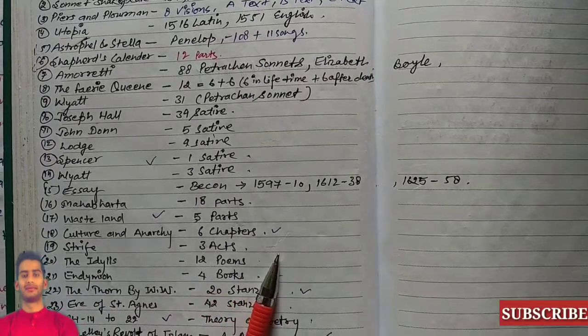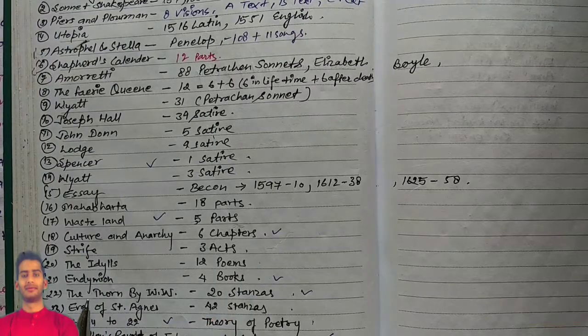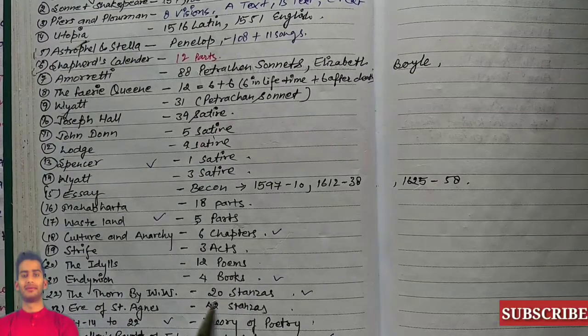Culture and Anarchy has six chapters. The Strife has three acts. The Riddles: 12 poems. Endymion has four books.